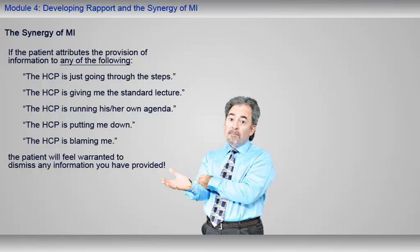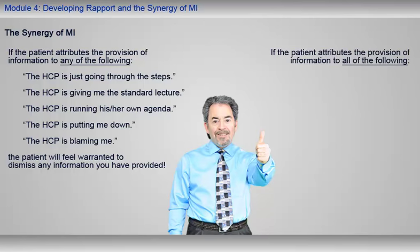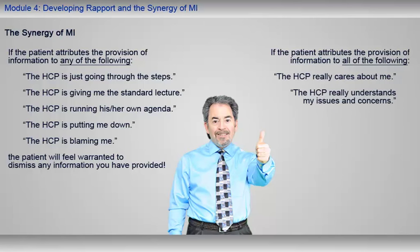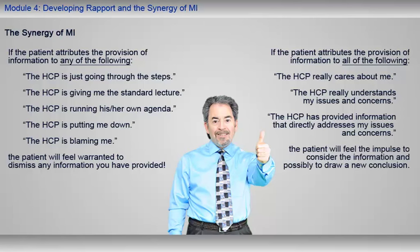If this occurs, then you will have rather little influence on the patient's health behavior. On the other hand, if the patient attributes the provision of information to all of the following — the healthcare professional really cares about me, really understands my issues and concerns, and has provided information that directly addresses my issues and concerns — the patient will feel the impulse to consider the information and possibly draw a new conclusion. These are the optimal conditions under which MI enables a healthcare professional to have a major influence on a patient's decision to engage in constructive health behavior change.